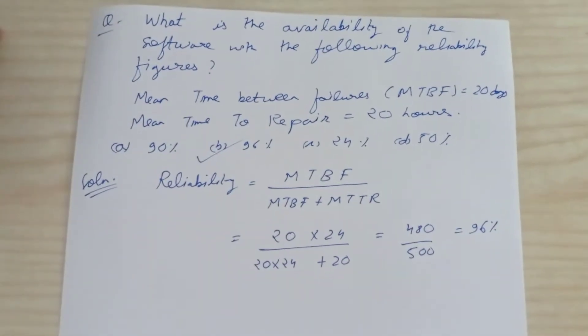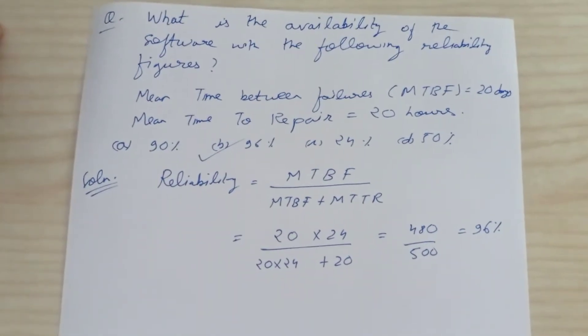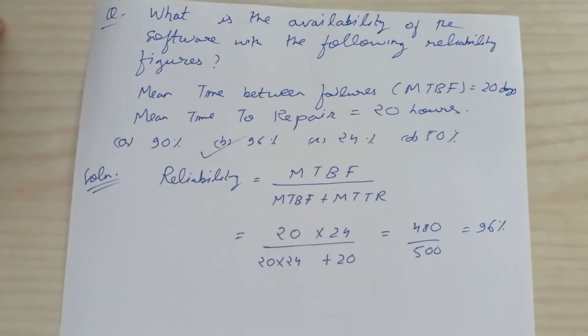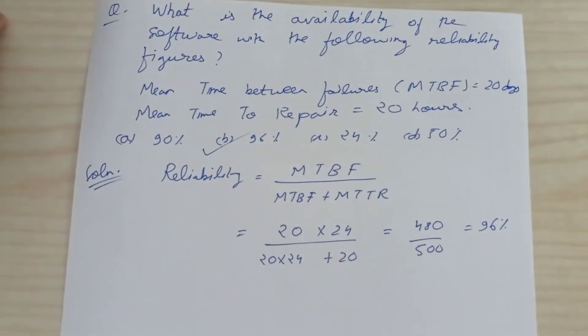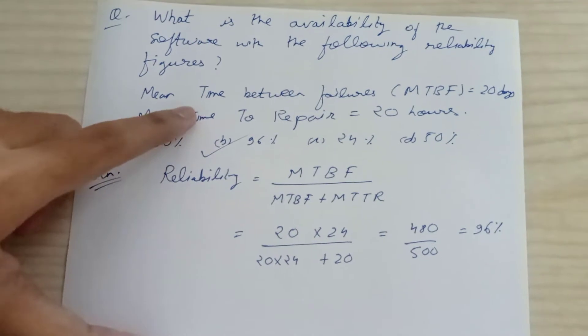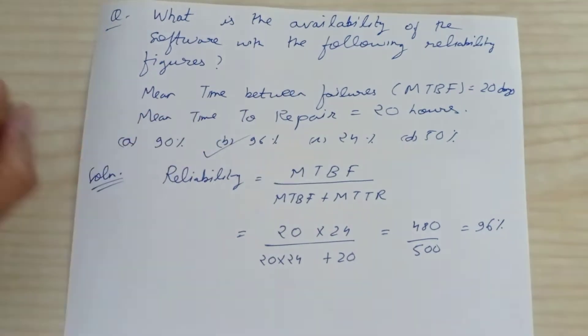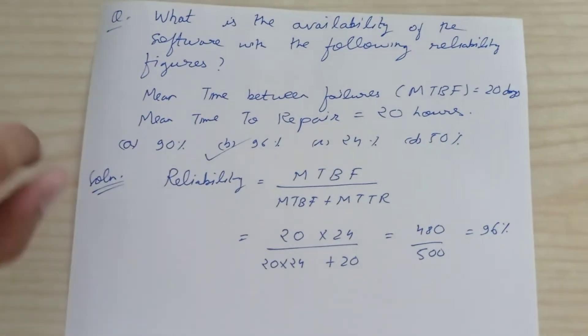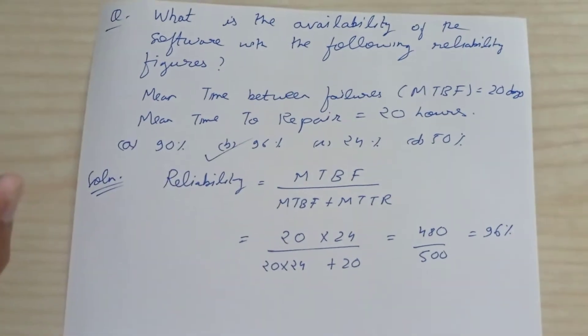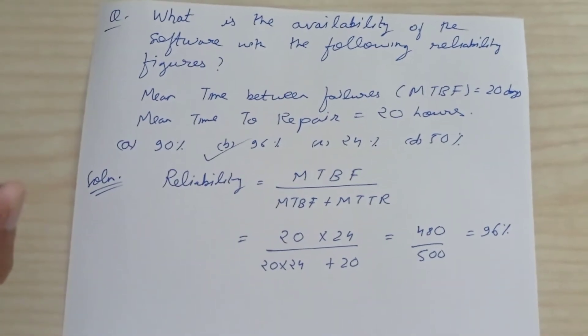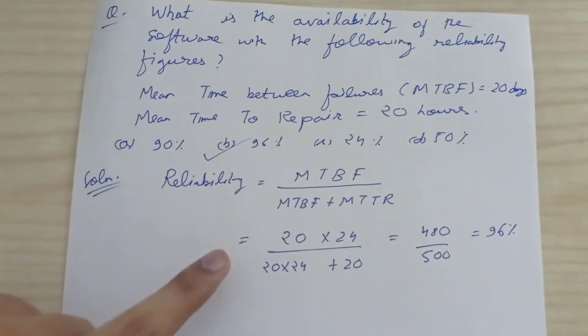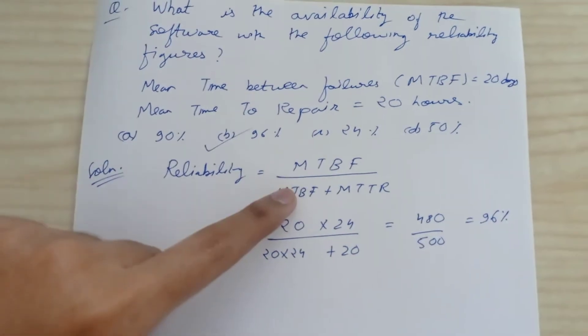In this question we have to calculate the availability of the software with the following reliability figures. Mean time between failures (MTBF) is given as 20 days and mean time to repair (MTTR) is given as 20 hours.